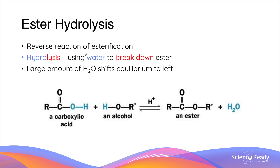While we spent most of the video discussing the production of esters, it is important to remind ourselves that this is a reversible reaction. The reaction between ester and water produces an alcohol and a carboxylic acid, and this process is referred to as hydrolysis — 'hydro' representing water and 'lysis' representing the breakdown of the ester. Using a large amount of water pushes the equilibrium towards the left side to increase the concentrations of the carboxylic acid and the alcohol.